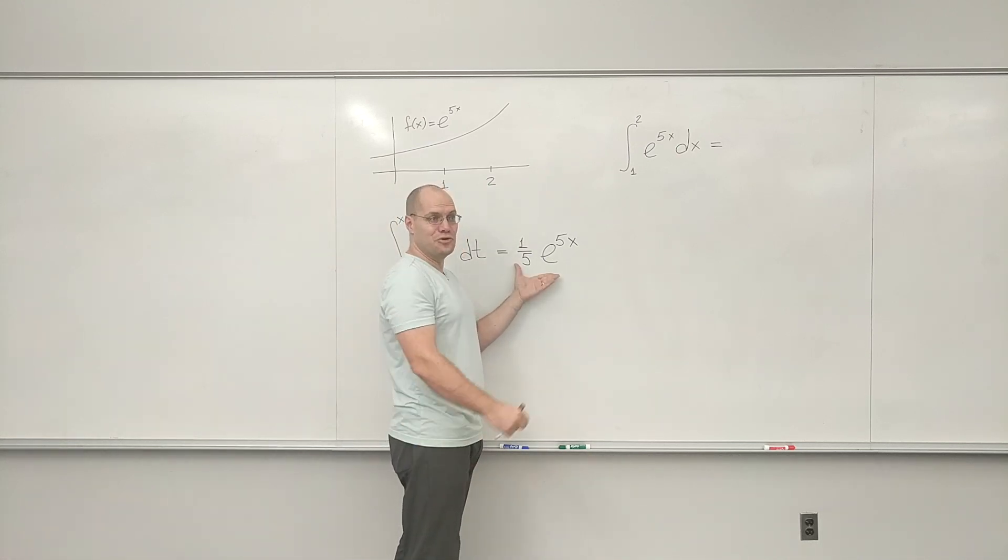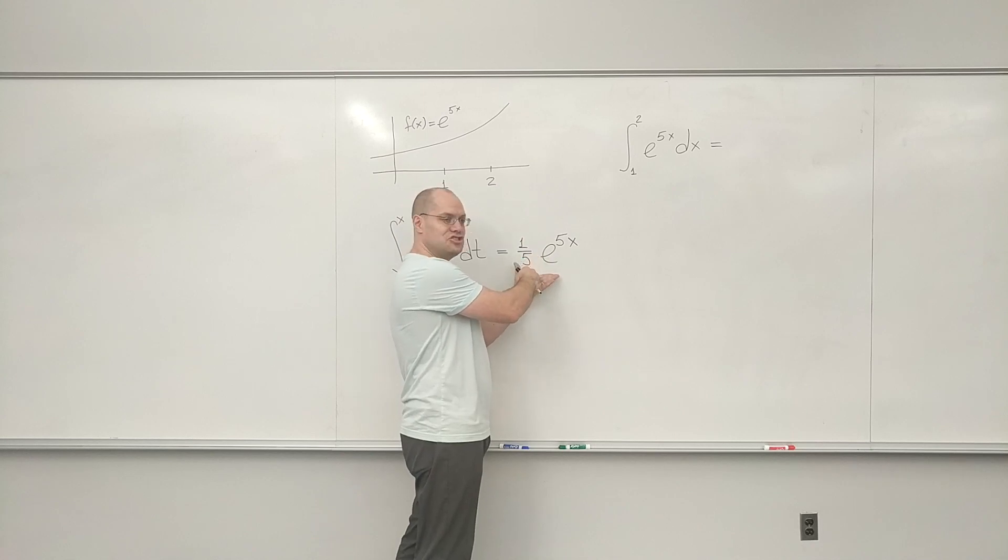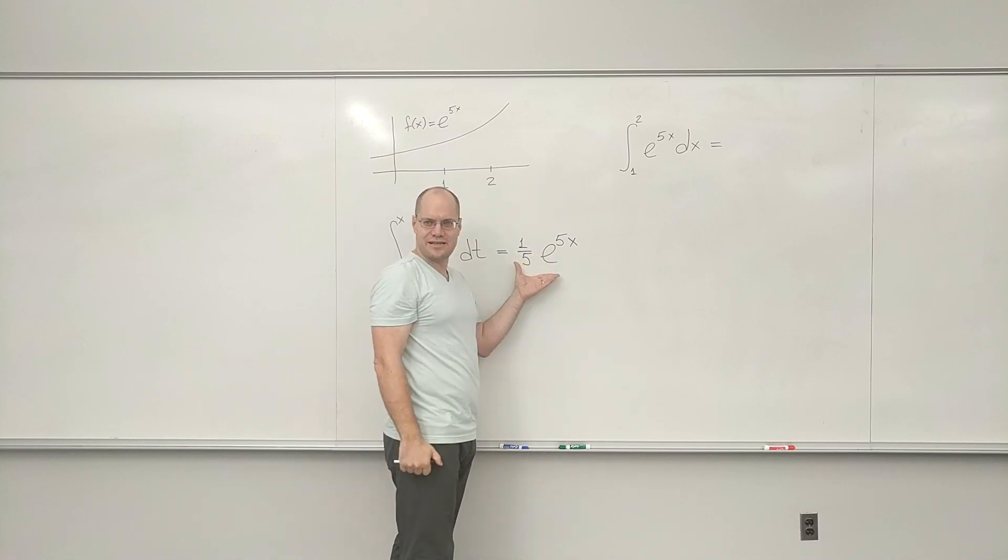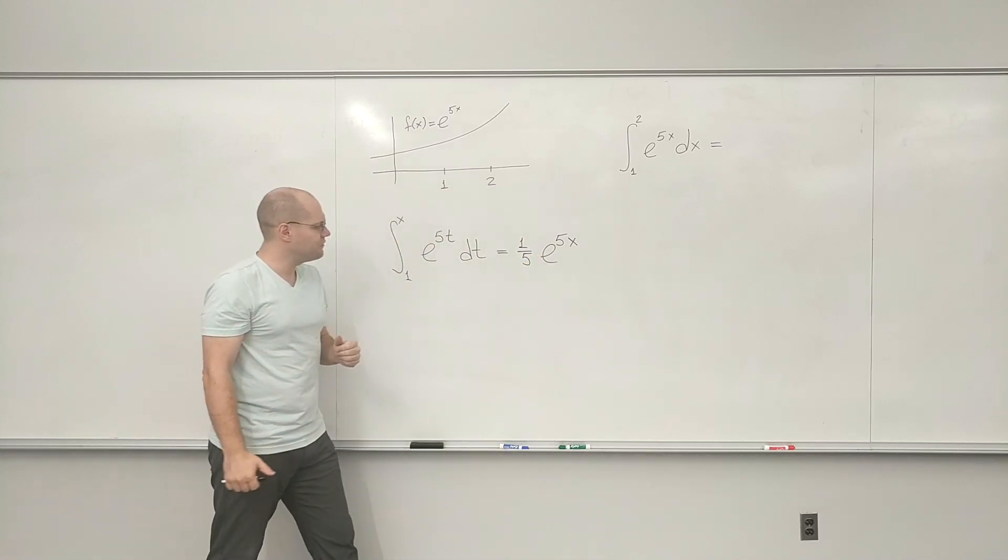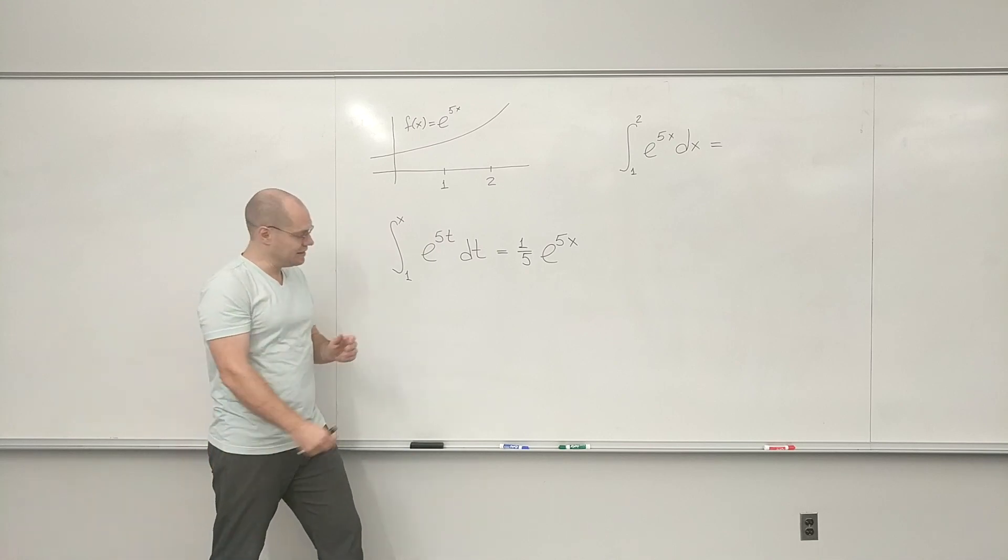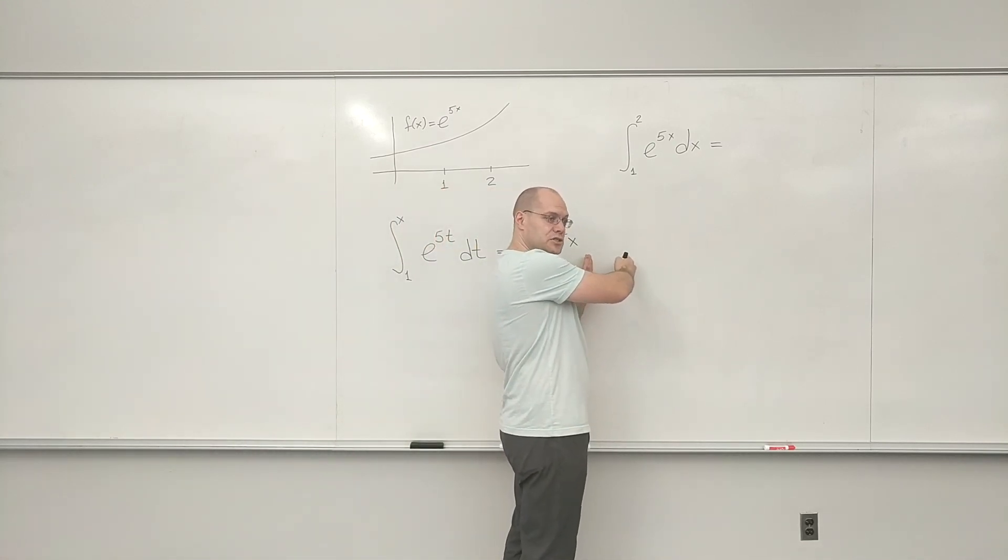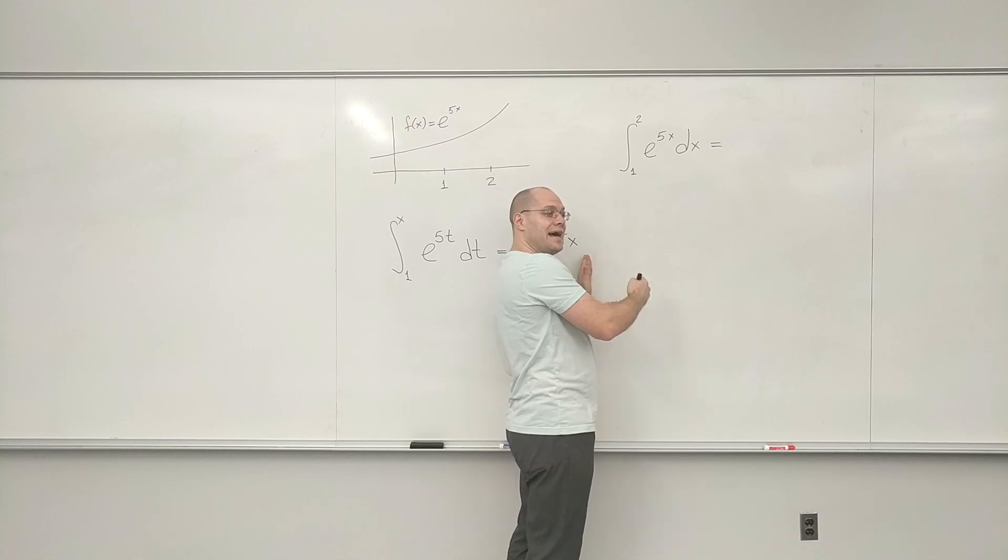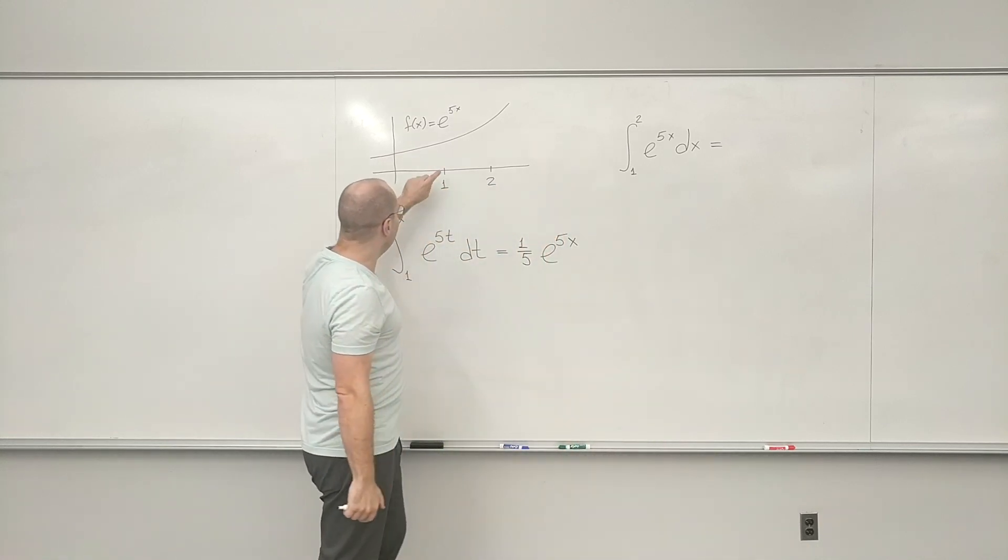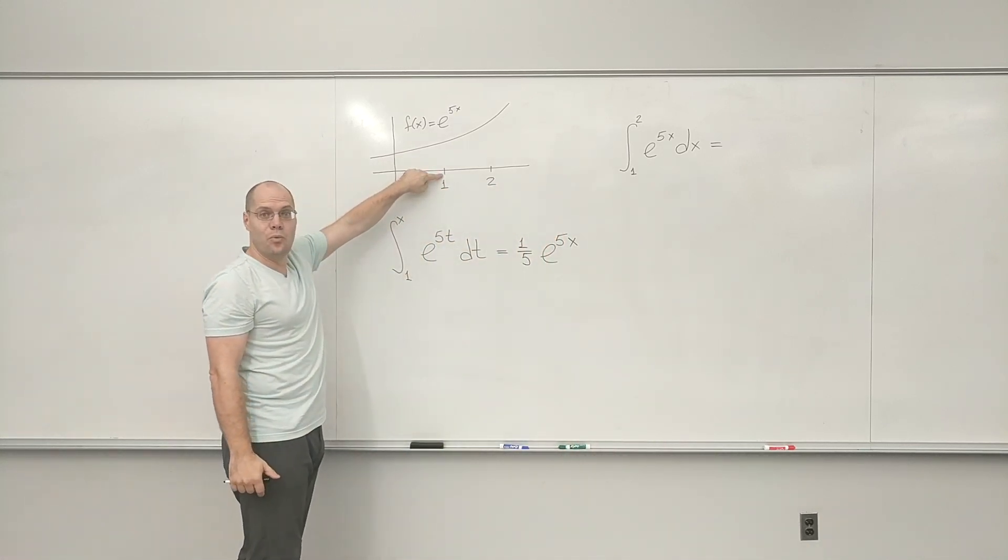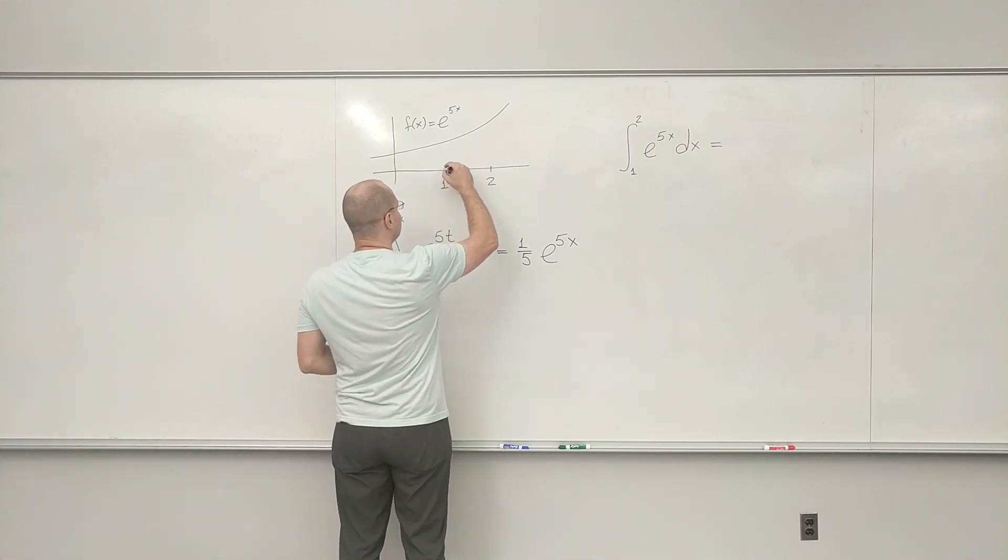Okay, so we just essentially guessed it and adjusted it to make it exactly right. 1 fifth e to the 5x. And now, once again, we can add any constant we want. So which one will we add? We'll add the constant so that at the value 1, right? Because we're now after this area.